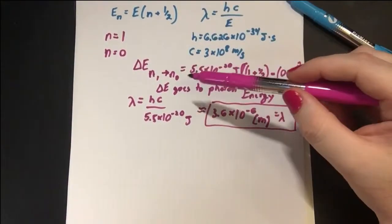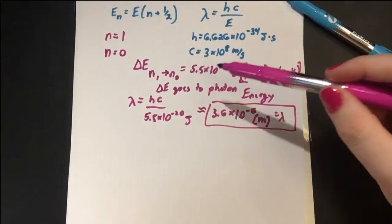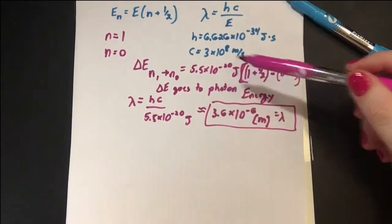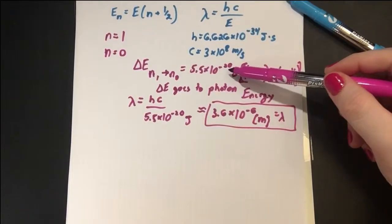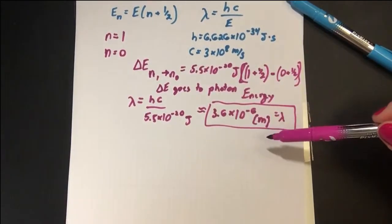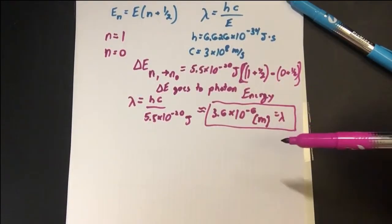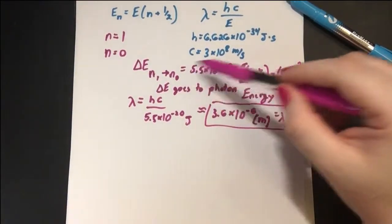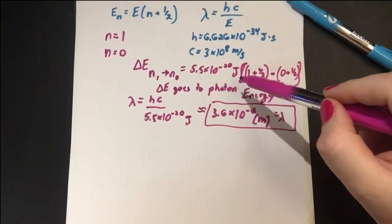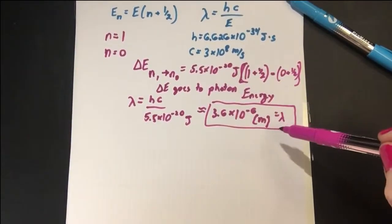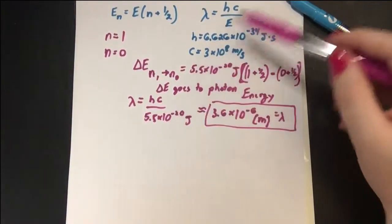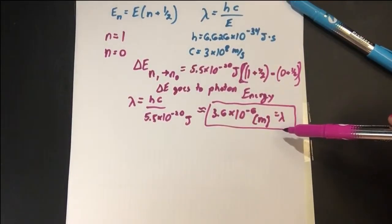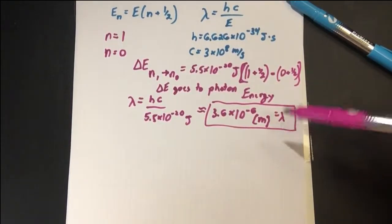So this is approximately our wavelength of our excited photon. So when we go from the first excited state to the ground state, a photon is released. It is given the energy that is changed from going from the excited state to the ground state. And this is the energy we have of our photon, 5.5 × 10⁻²⁰ joules, and then our wavelength is just plugging into our equation, 3.6 × 10⁻⁶ meters.